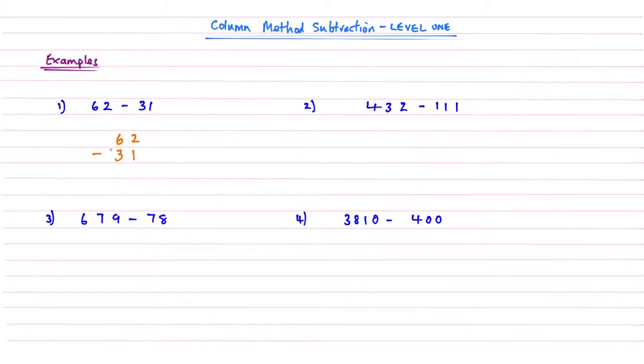So 62 subtract 31. Let's add a little line there so we know it's a subtract, and then we're going to add our lines, our kind of working out lines if you like underneath. Then what we do, we take each column in turn and we just do the subtraction. For our first column, 2 subtract 1 gives me an answer of 1. Then we move on to our tens column, 6 subtract 3, that gives me 3. So 62 subtract 31 gives me an answer of 31. That's example 1 completed.